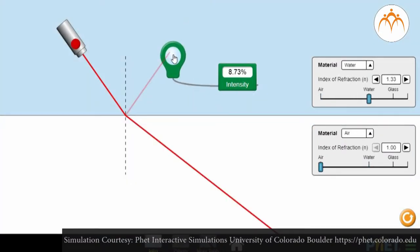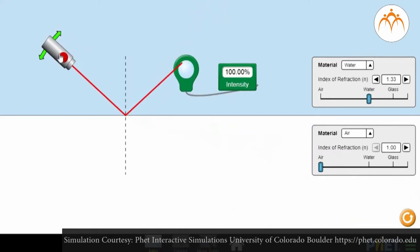If the torch is kept in water and another medium is air, light behaves differently at a certain angle. 100% of light is reflected back into the water. This is known as total internal reflection.